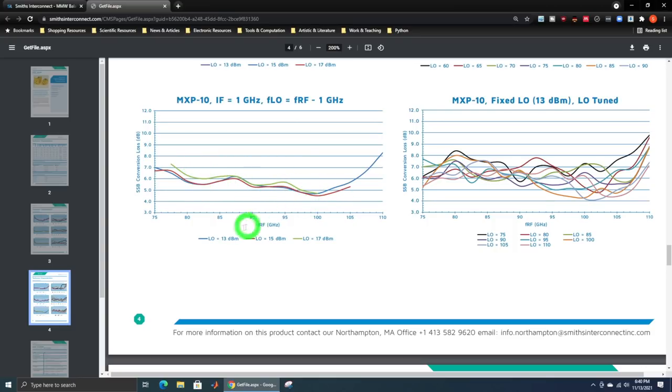But yeah, not too bad. That's not very sensitive to the LO power, which is good. That's what you're looking for. But you need a minimum of 13 dBm. And this is an IF of 1 gigahertz. So let's go ahead and see what it looks like. I'm eager to take it apart.